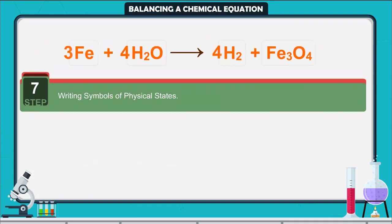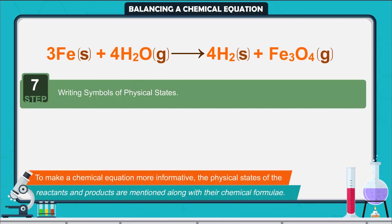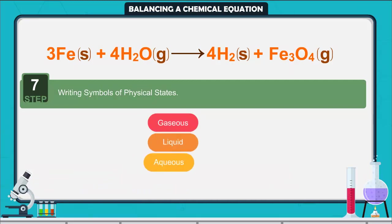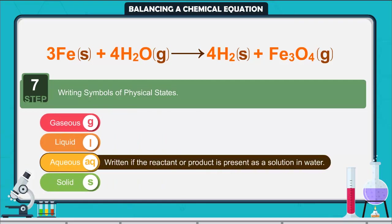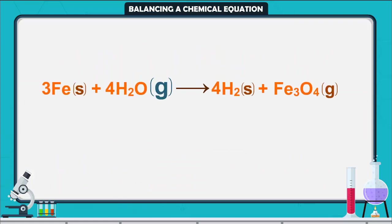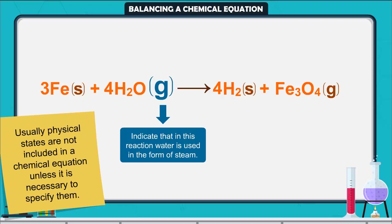Step 7: Writing symbols of physical states. To make a chemical equation more informative, the physical states of the reactants and products are mentioned along with their chemical formulae. The gaseous, liquid, aqueous, and solid states of reactants and products are represented by the notations (g), (l), (aq), and (s) respectively. The word aqueous (aq) is written if the reactant or product is present as a solution in water. Note that the symbol (g) is used with H2O to indicate that water is used in the form of steam. Usually physical states are not included in a chemical equation unless necessary.